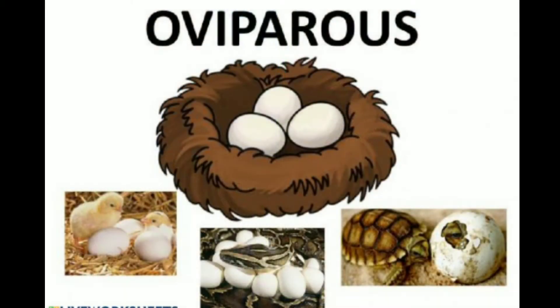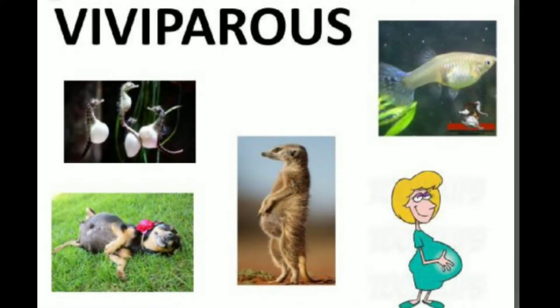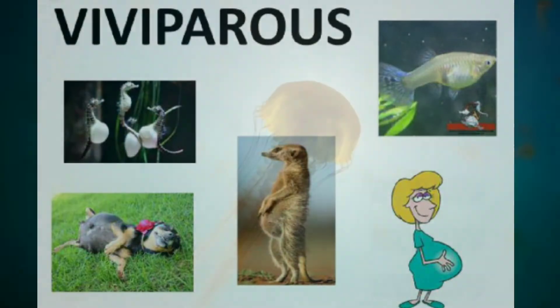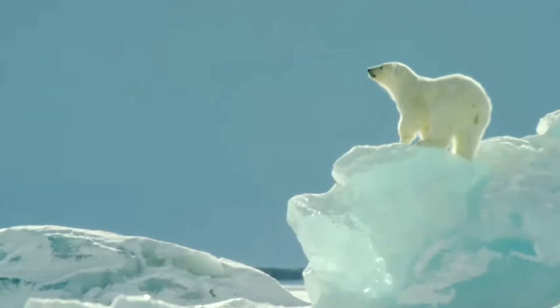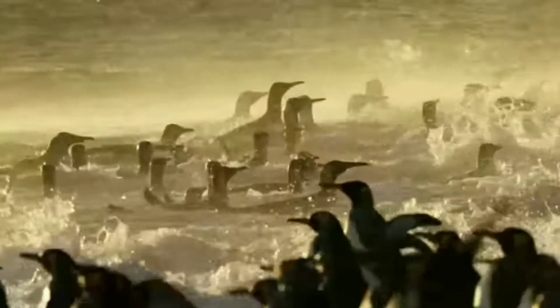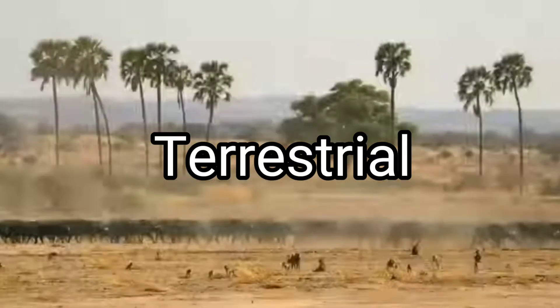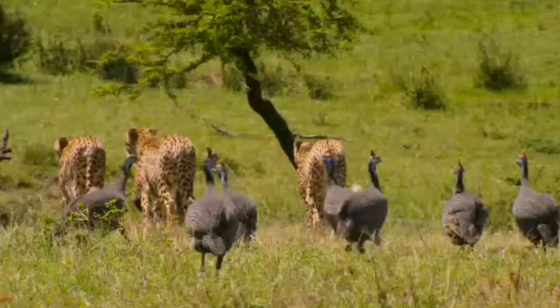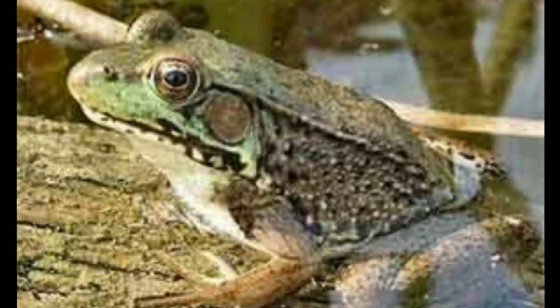Namely, oviparous animals which lay eggs, and viviparous animals which give birth to their young ones. According to their habitat, animals are usually classified into terrestrial and aquatic animals.